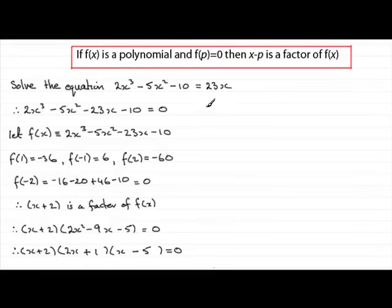So where does this take us? Well, when something's factorized like this, it means that any one of these three factors can equal 0. So therefore, in the usual way, you would say x plus 2 equals 0, or the other factor 2x plus 1 equals 0, or the third factor x minus 5 equals 0.